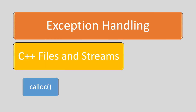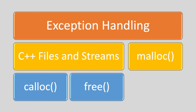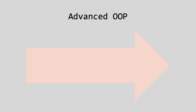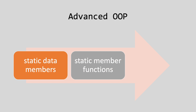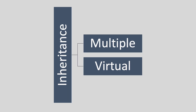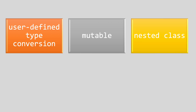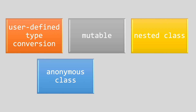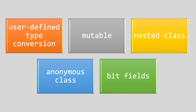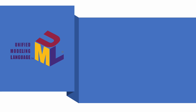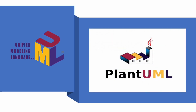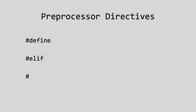Handle exceptions carefully. Learn file operations well and understand how to read and write files. Grasp the concept of managing memory dynamically. Upgrade your object-oriented programming skills by exploring advanced concepts like static data members, static member functions, and the this pointer. Learn about inheritance, including multiple inheritance and virtual inheritance. Understand user-defined type conversions, mutable data members using the mutable specifier, nested class declarations, anonymous class types, and C++ bit fields for optimizing memory usage. As you explore OOP, consider diving into UML and using a diagram tool like PlantUML to draw and practice creating UML diagrams. Also understand the basics of preprocessor directives like #include and #define.